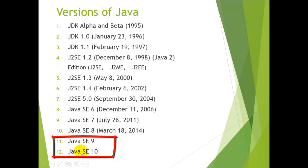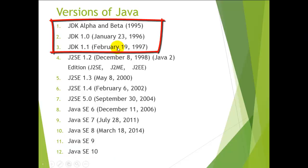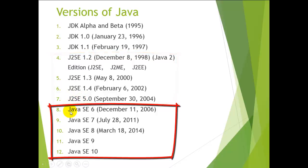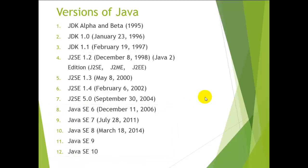This is the complete list of Java versions which are currently available, and two versions are about to release in future. Looking at this list, the first three versions are JDK, after that you will see J2SE versions, and after the seventh version you will see simply Java. So I divide the whole versions into three categories: JDK (Java Development Kit), J2SE (Java 2 Standard Edition), and simply Java 6, Java 7, and so on.